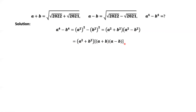We only need to find two numbers: the first number for A squared plus B squared, and the second number for A plus B times A minus B. Let's find A squared plus B squared next.